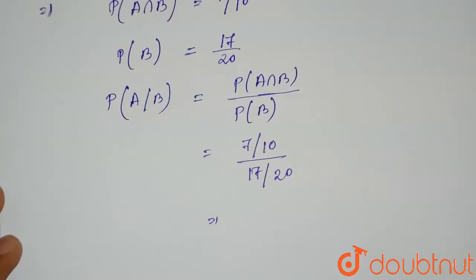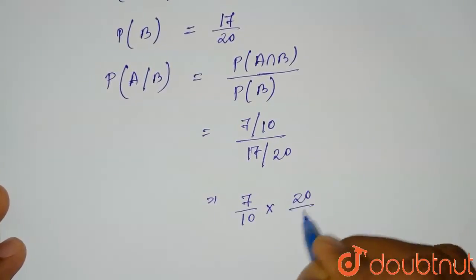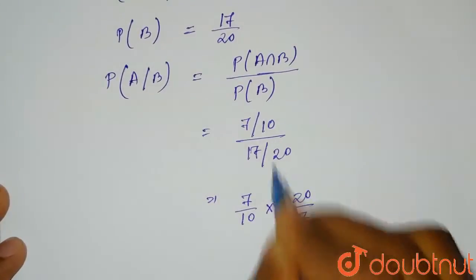Or from here, we can write it as 7 divided by 10 multiplied by 20 divided by 17. If we are multiplying, the value will be reciprocal.